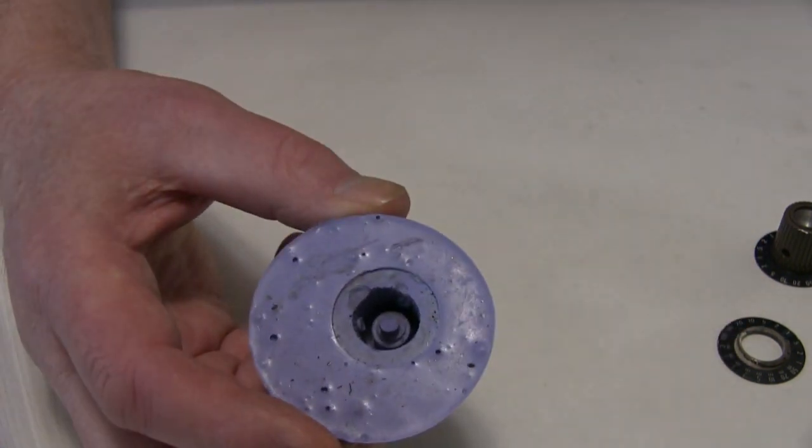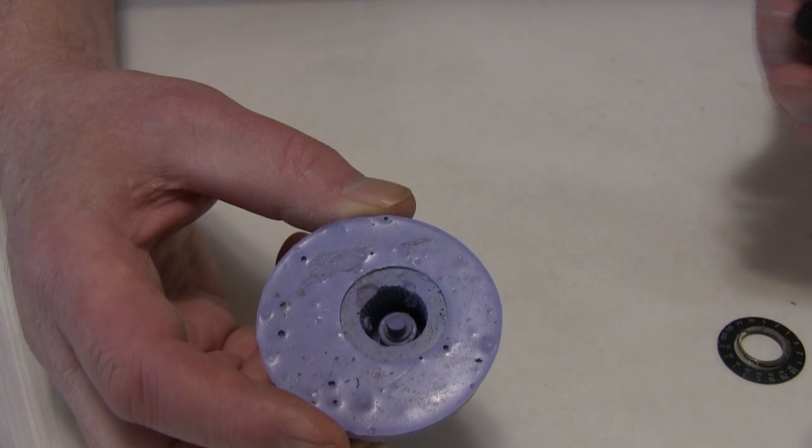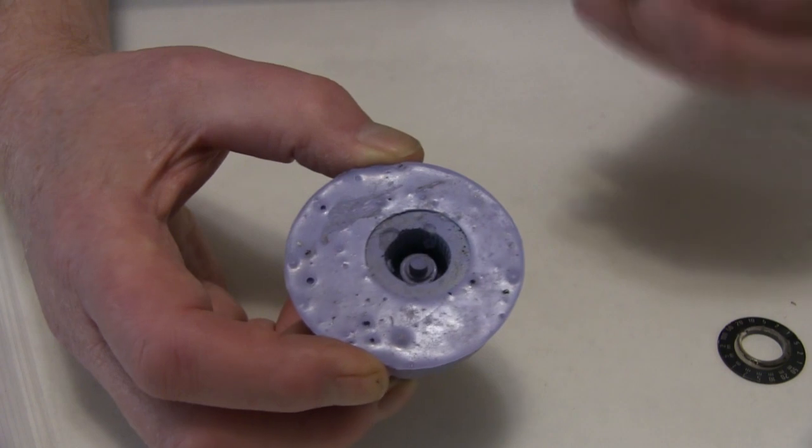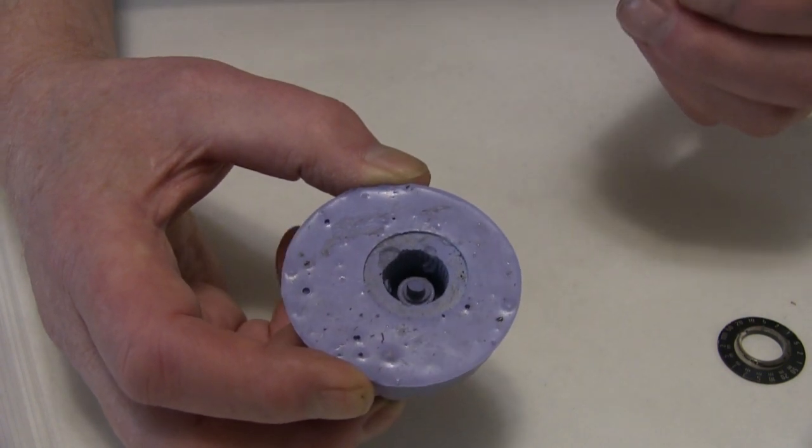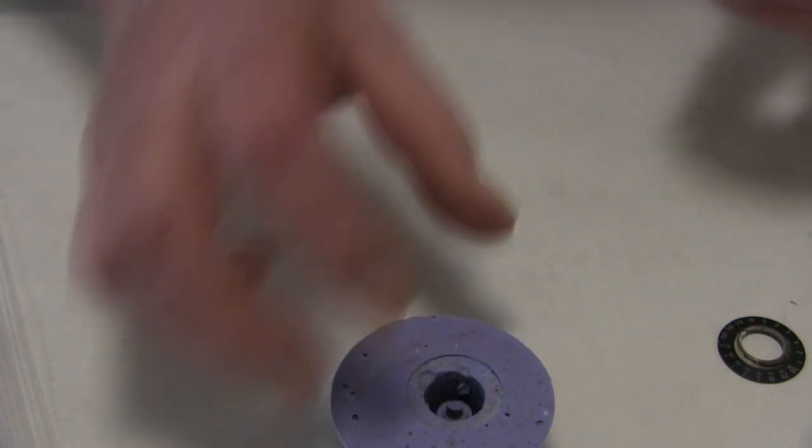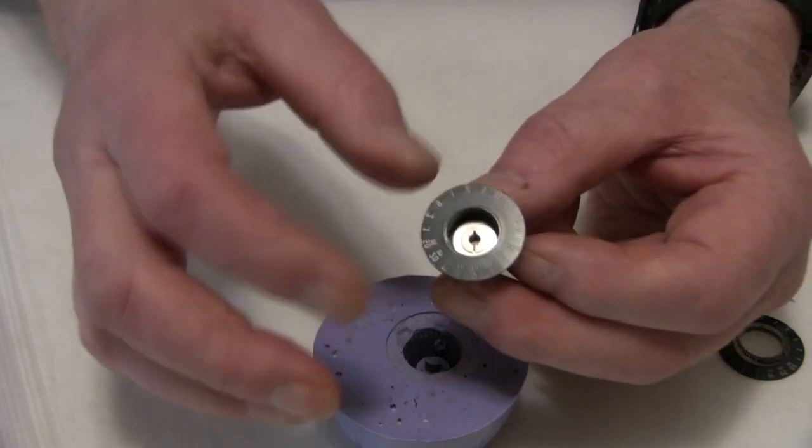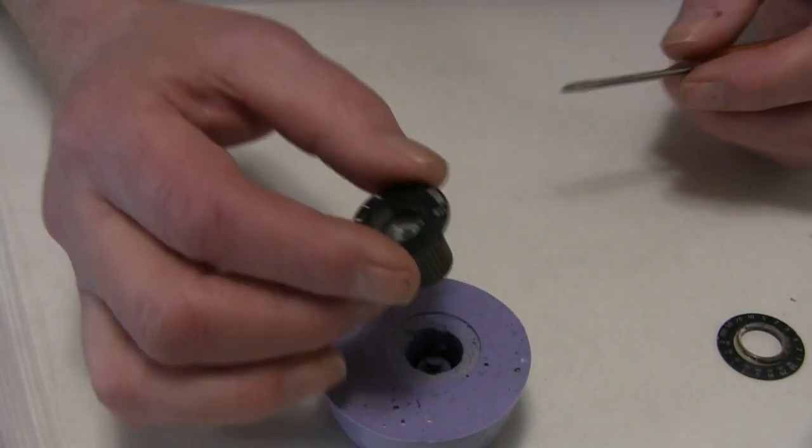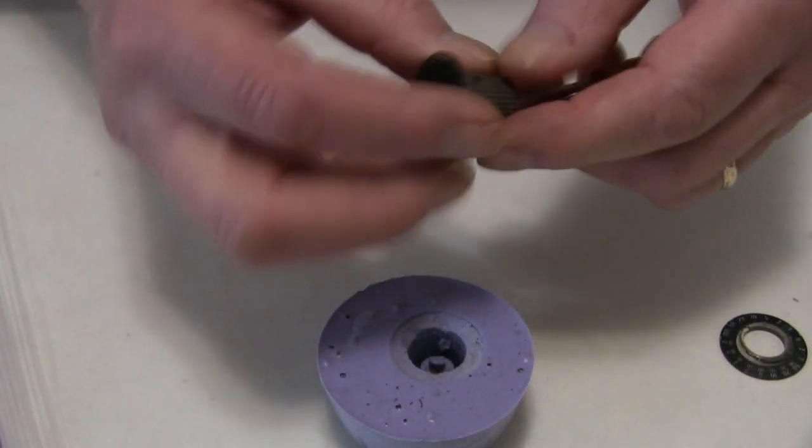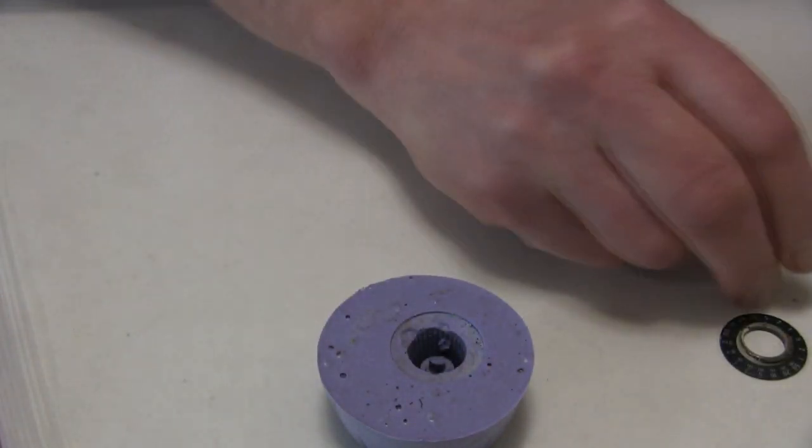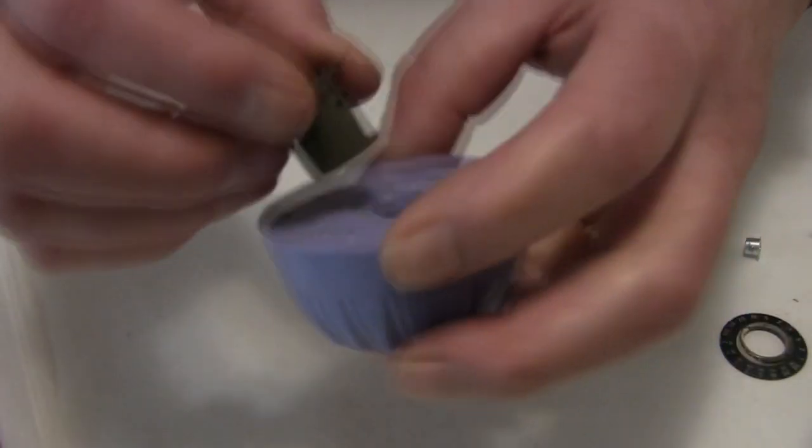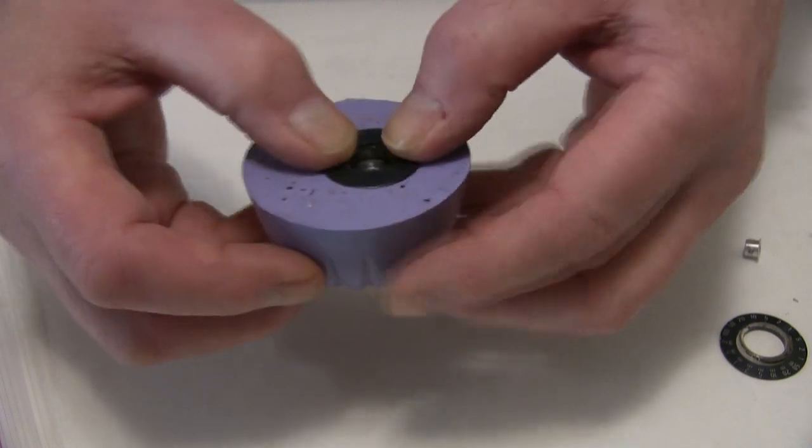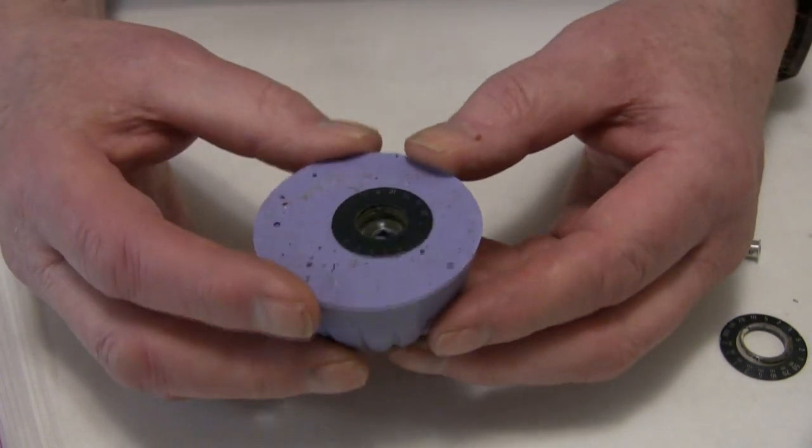But it turns out that the knob from the PG-506 is almost the same configuration as the 485 knob. But there's an insert in the PG-506 knob, so I'm going to just remove it. And once that insert is removed, the knob will fit into the mold correctly.